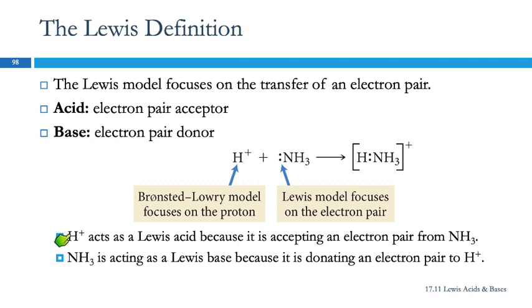So here we have H+ acting as the Lewis acid because it's accepting the electron pair from ammonia. Ammonia is acting as a Lewis base because it's donating an electron pair.